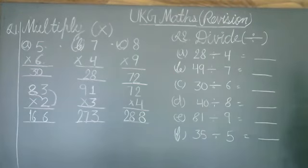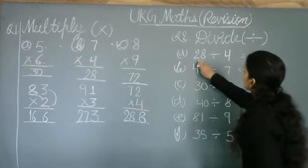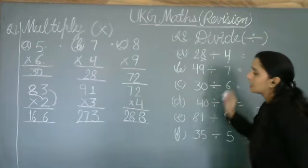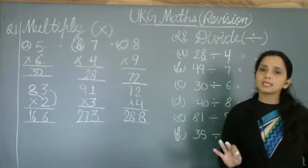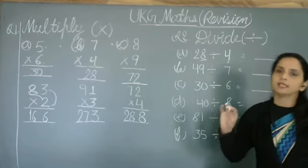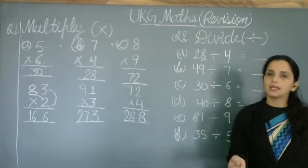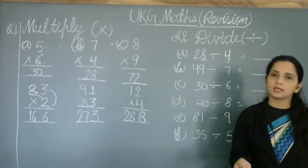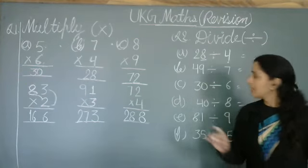So what do we have to divide? See, twenty-eight divided by four. We have four to divide, so four of the table we have to read. When we read where was twenty-eight. Read the four table: four ones are four, twos are eight, threes are twelve, fours are sixteen, fives are twenty, sixes are twenty-four, sevens are twenty-eight.